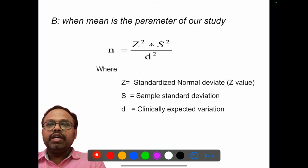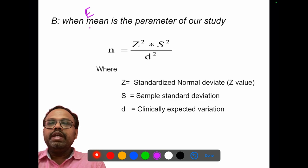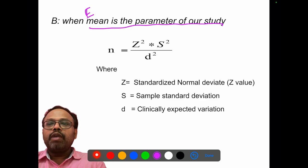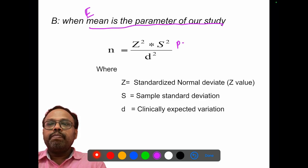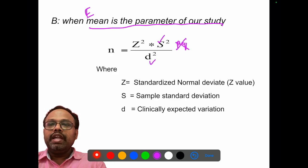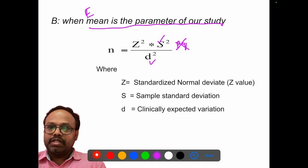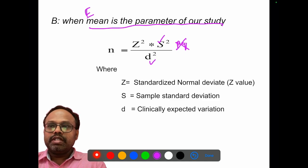Next, we move on to the estimation of sample size when mean is the parameter of the study. The formula is slightly changed — instead of P and Q, it uses standard deviation squared, and D remains the same as the clinically expected variation or precision. All else remains the same.